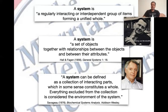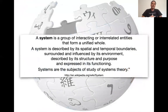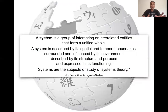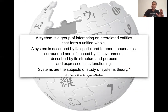So there must be a boundary around the system. For the full truth, we go to Wikipedia. It says a system is a group of interacting or interrelated entities that form a unified whole. A system is described by its spatial and temporal boundaries, surrounded and influenced by its environment, which is outside the boundaries. It's described by its structure and purpose, and expressed in its functioning. Systems are the subjects of study of systems theory.